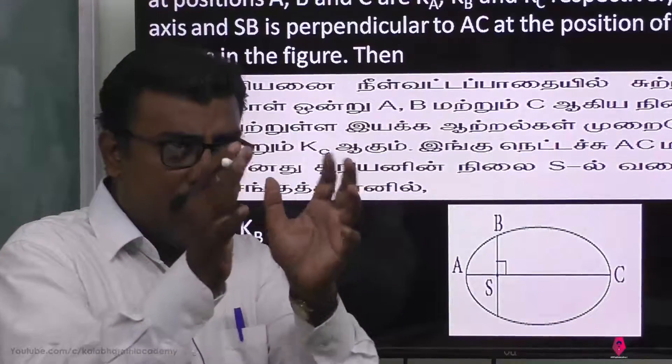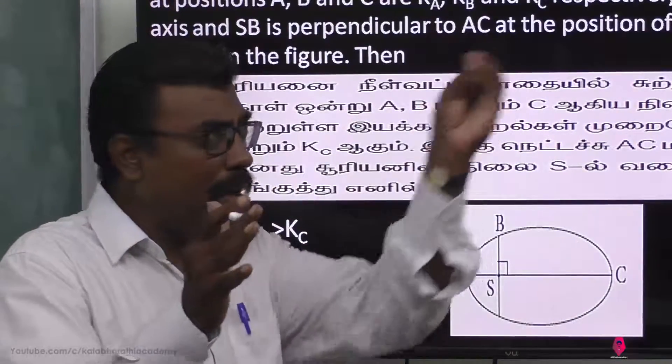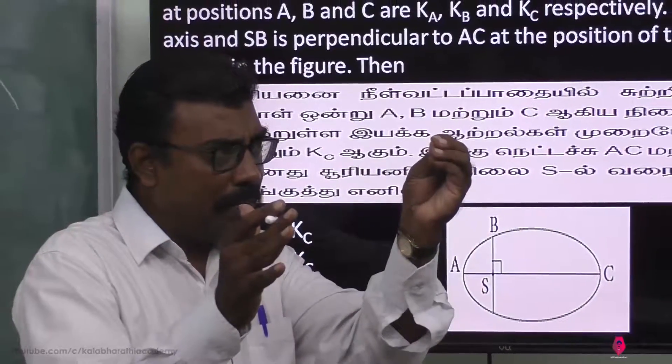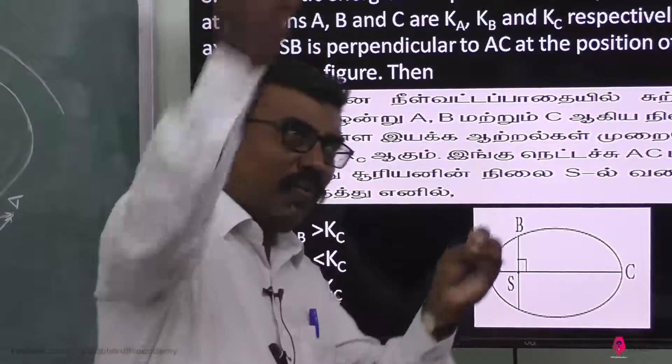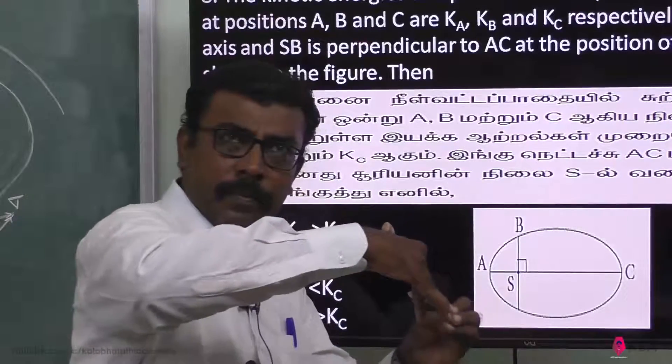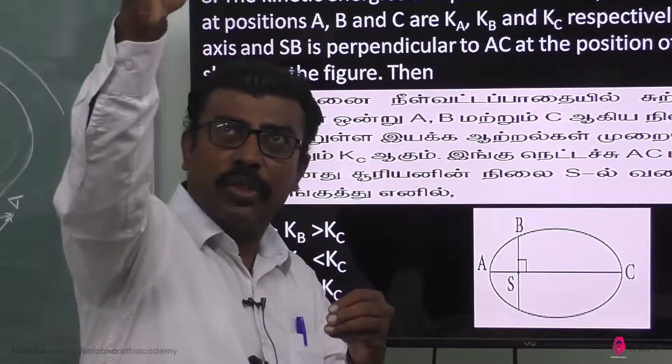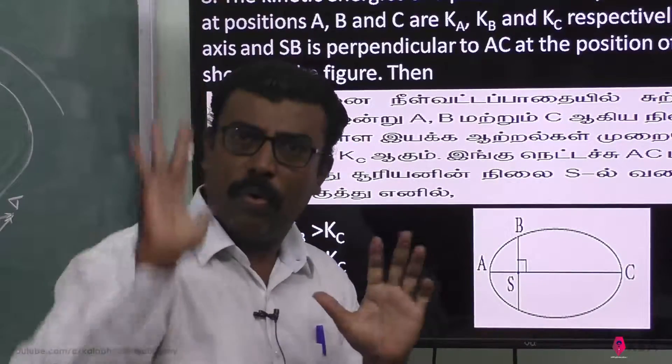For a central object like the sun, the planet revolves faster when it is closer to the sun and revolves slower when it is farther away.